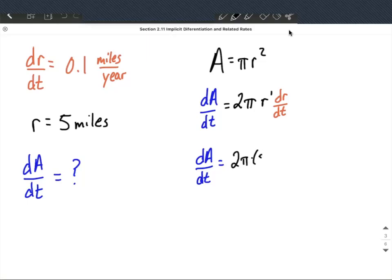We have the 2, the pi. In for r, we can replace that with 5 miles. And in for the dr/dt, we can put 0.1.